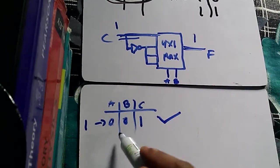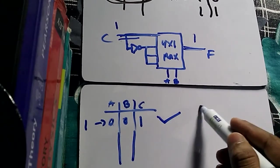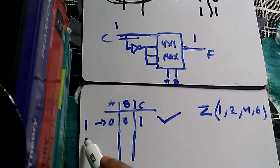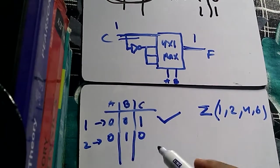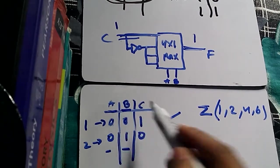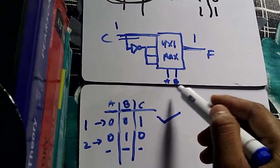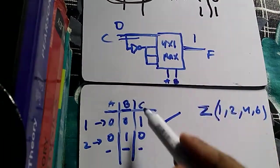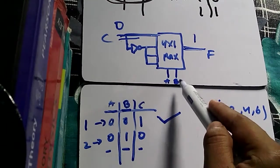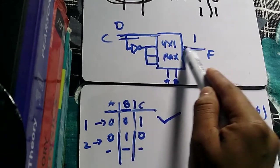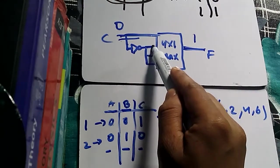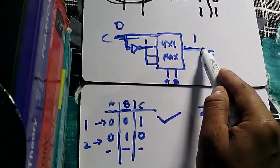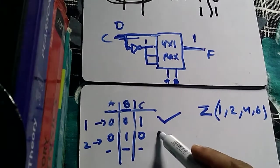The second value to check is minterm 2, which is binary 0 1 0. So A=0, B=1, and C=0. With A=0 and B=1, the select lines connect the second input line to the output. The second input comes from C through a NOT gate. C=0 passes through the NOT gate and becomes 1, which passes directly to F. So this combination also gives output 1.